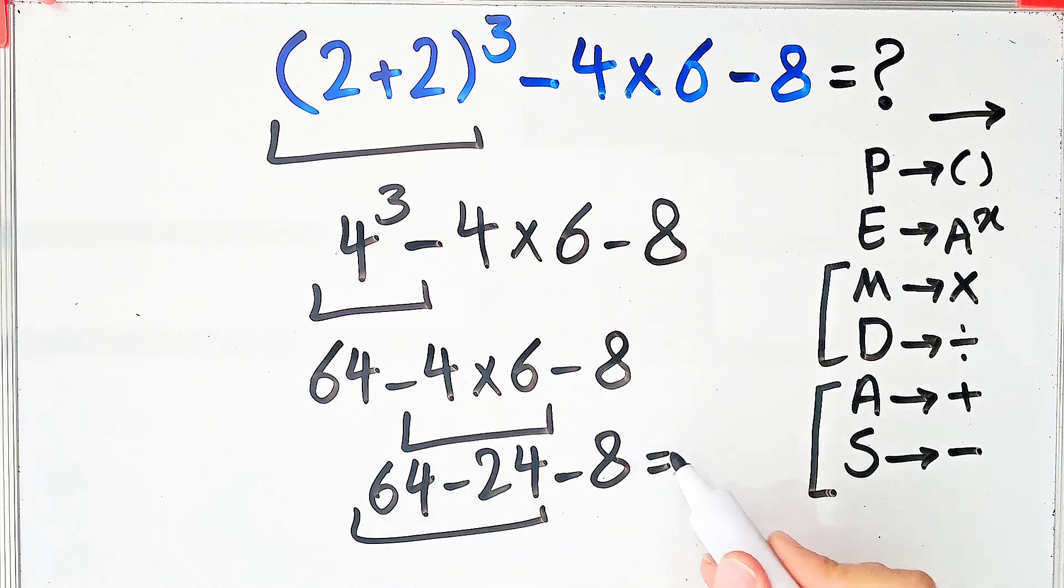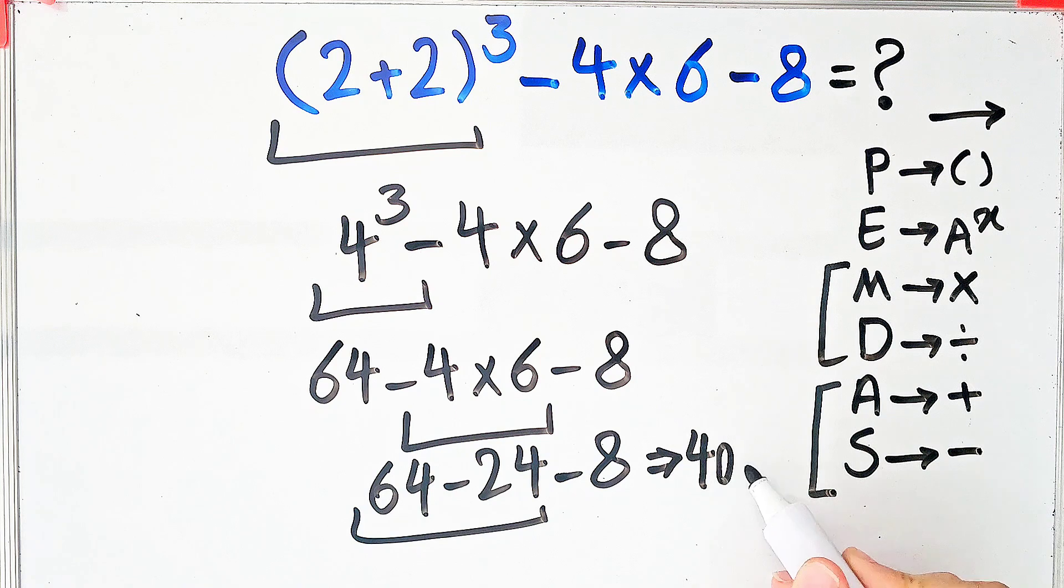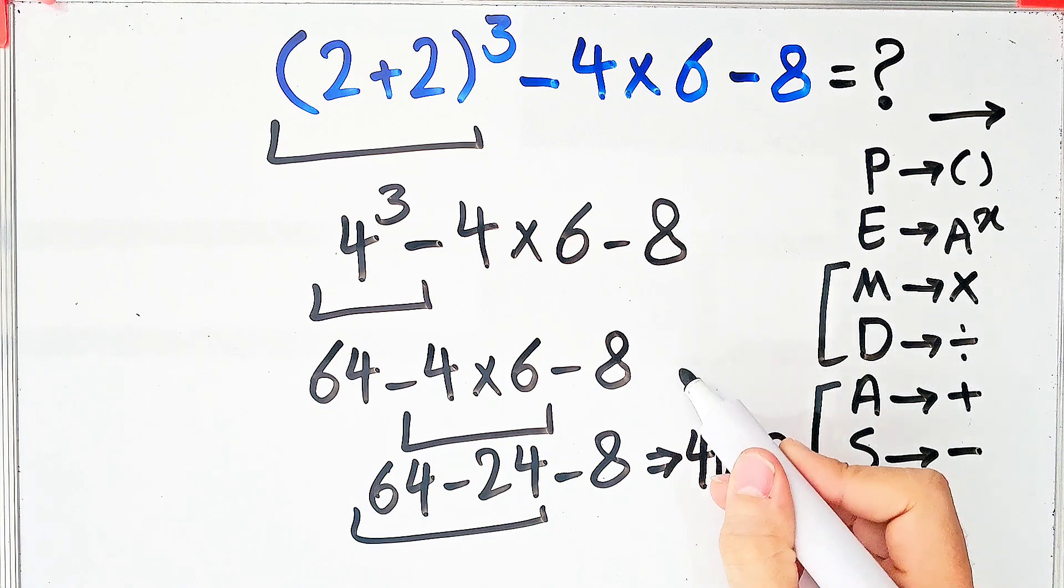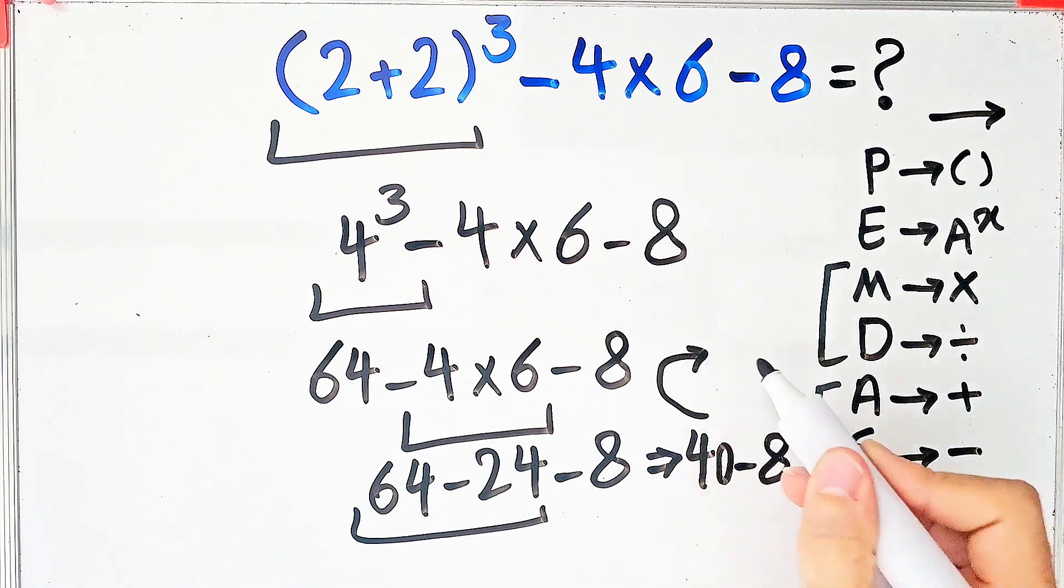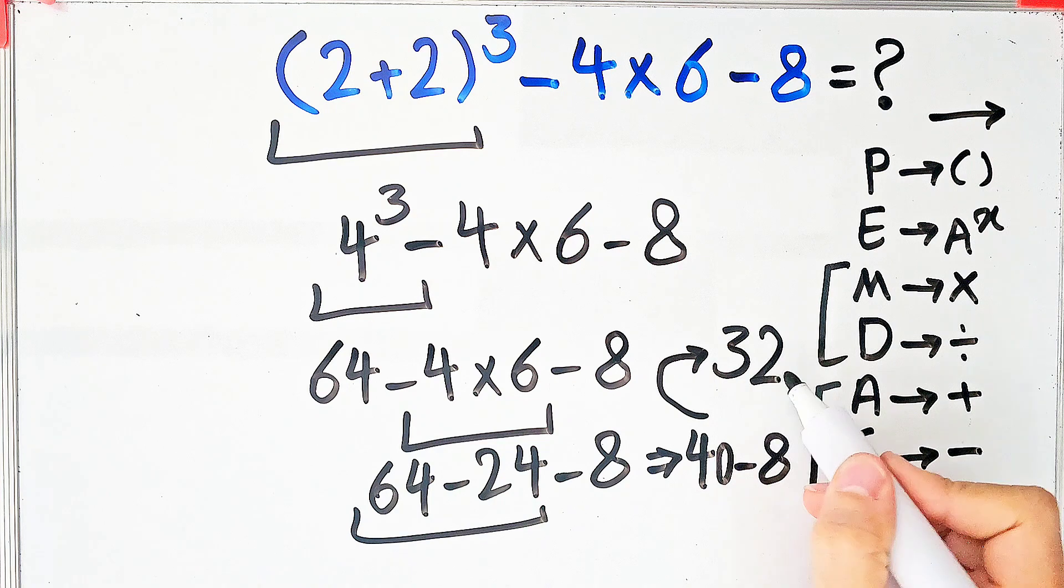64 minus 24 equals 40, and 40 minus 8 equals 32. The final answer to this question equals 32. Thanks for watching.